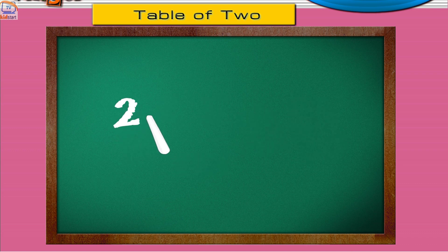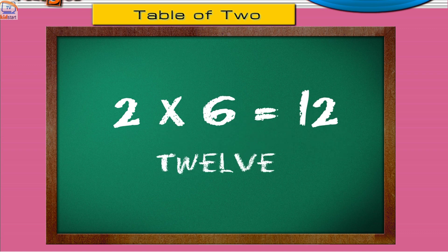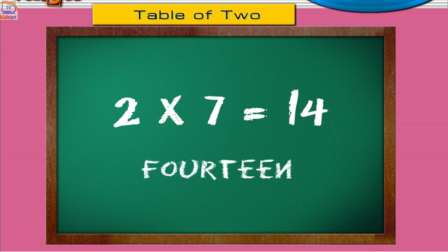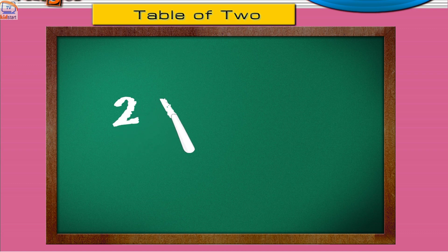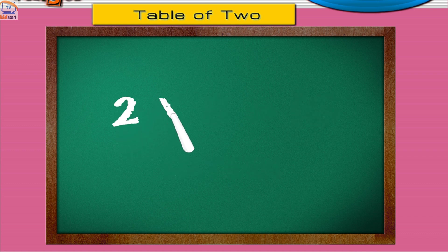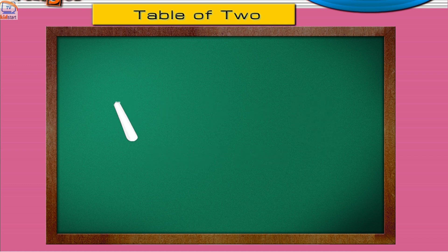Two sixes are twelve. Two sevens are fourteen. Two eights are sixteen. Two nines are eighteen. Two tens are twenty.